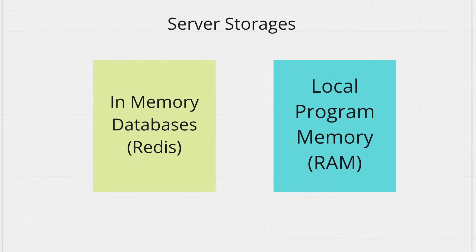There are a few ways you can use caching on the server. One is in-memory databases like Redis — you run these databases on your server machine and the data is retained in memory, which is your machine's RAM. Another option is your local program memory, where you use variables in your server code to store data. Before making API calls or DB queries you check if the data is already in your local variable. For both these cases your data resides in memory, which means it's temporary storage. Your cache can be destroyed whenever your server is restarted — that's the nature of cache data. You should never keep data in a cache that you want to persist indefinitely.